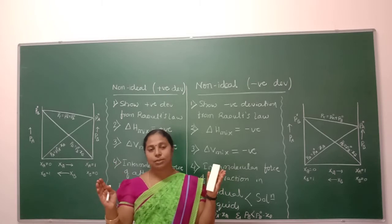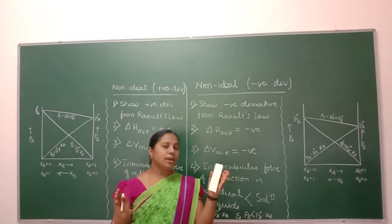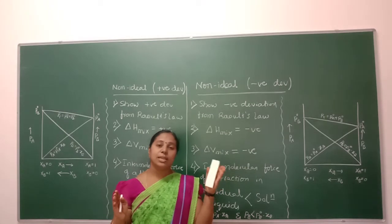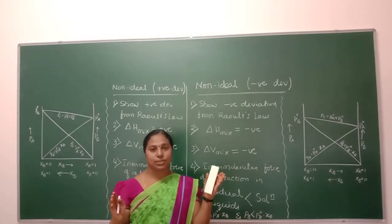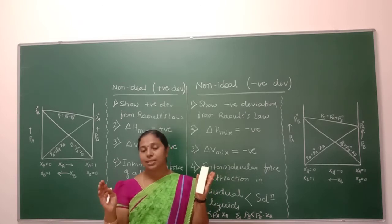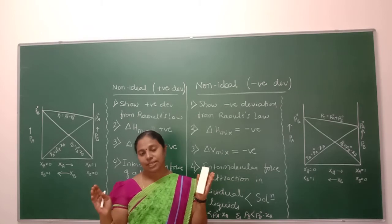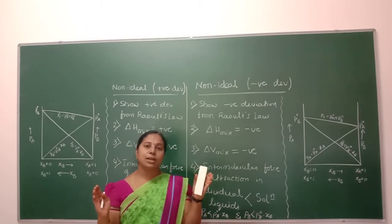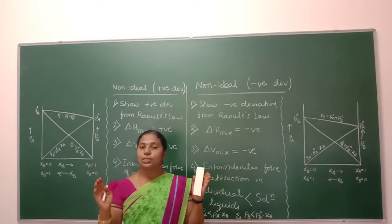In an ideal solution, delta H of mixing is equal to 0. In case of a non-ideal solution, the value of delta H of mixing is not equal to 0 — it may be either positive or negative. Also, delta V of mixing will be 0 in case of an ideal solution. In case of non-ideal, delta V of mixing is not equal to 0.